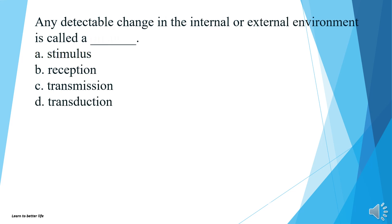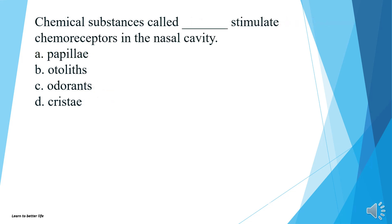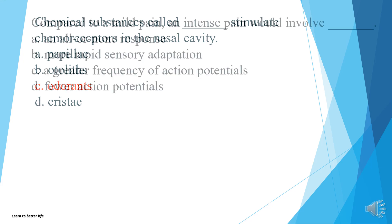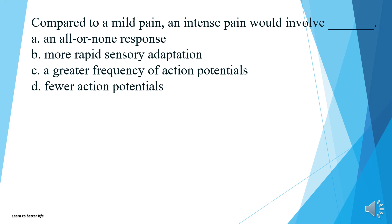Any detectable change in the internal or external environment is called a stimulus, reception, transmission, or transduction? The answer is A, stimulus. Chemical substances called what stimulate chemoreceptors in the nasal cavity? The pili, otoliths, odorants, or cristi? The answer is C, odorants. Compared to a mild pain, an intense pain would involve an all or none response, more rapid sensory adaptation, a greater frequency of action potentials, or fewer action potentials? The answer is C, a greater frequency of action potentials.